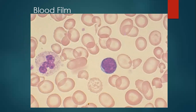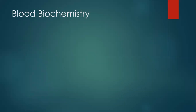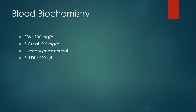The blood film of the patient shows that some of the red blood cells are hypochromic and microcytic. For the blood biochemistry, the blood sugar is normal and serum creatinine is normal — important to exclude chronic illness like renal impairment. Liver enzymes are normal, excluding liver disease. Serum LDH is normal, which is usually elevated in patients with hemolytic anemia and malignancy. The total serum protein is normal, and total serum bilirubin of 0.6 confirms that this patient does not have jaundice.